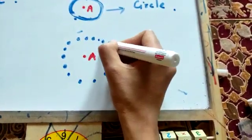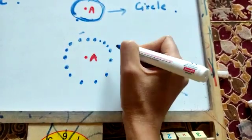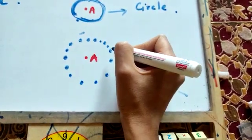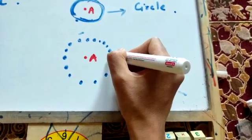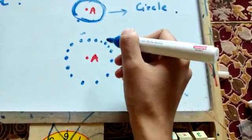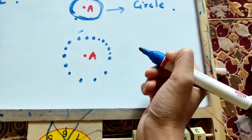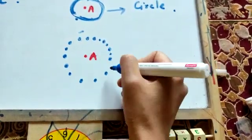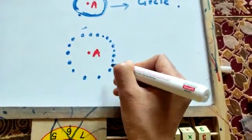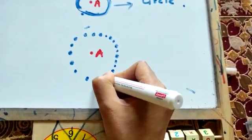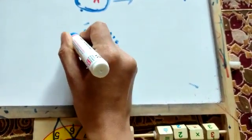Your answer will be yes, we can. Suppose we draw a point here — its distance from point A will be 2 cm. With the help of a ruler, we draw another point here — its distance from point A is also 2 cm. We can keep drawing more and more such points here, here, here, and here.